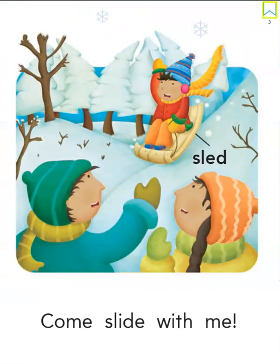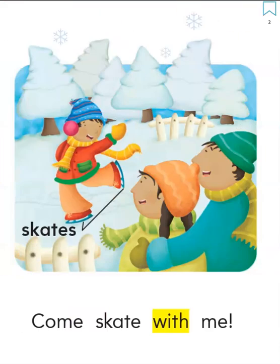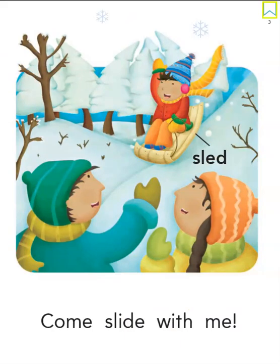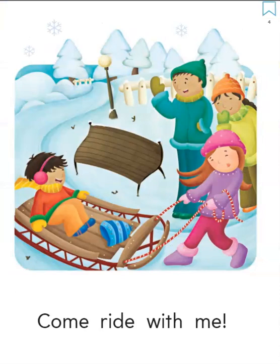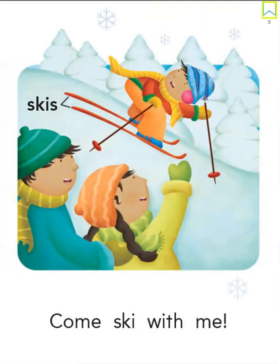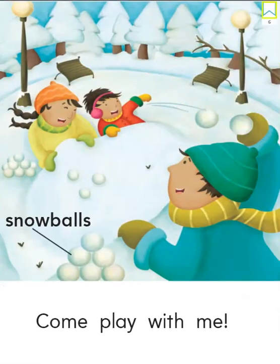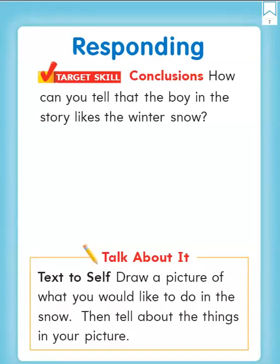Let's go back and look at the pictures. On this page, he is skating, and they're smiling. On this page, he is on a sled — he is sledding. On this page, he is getting pulled on a toboggan. And on this page, he is skiing. In all of the pictures, he's smiling, and he's inviting friends to come do the things with him. That's how I know the boy likes the winter snow.